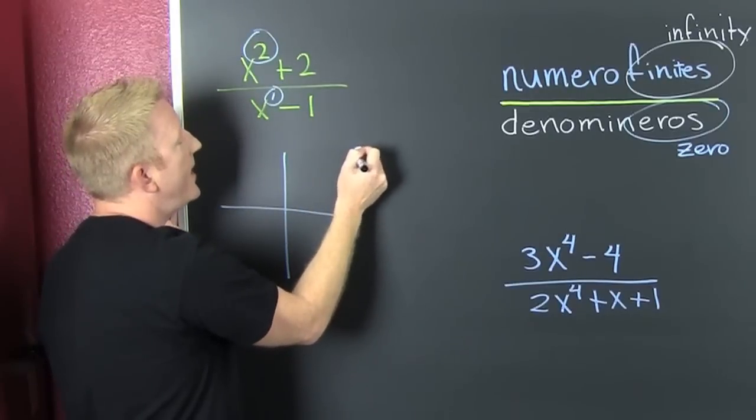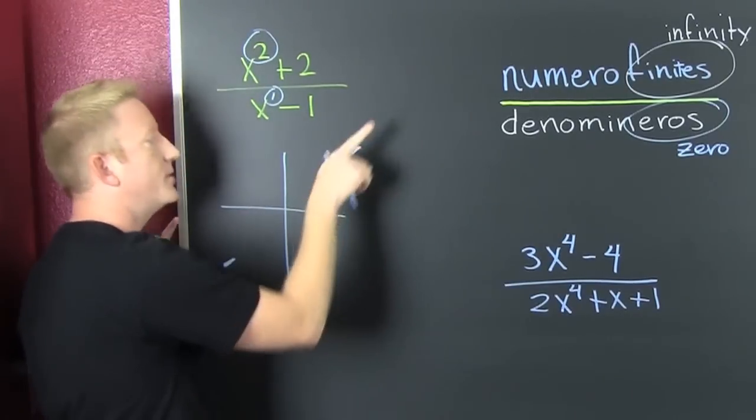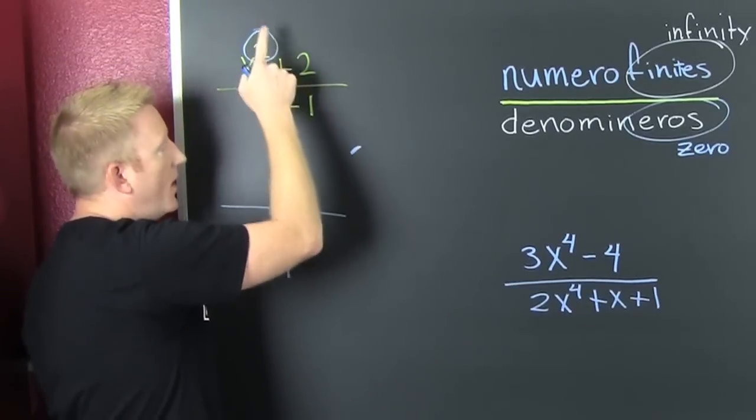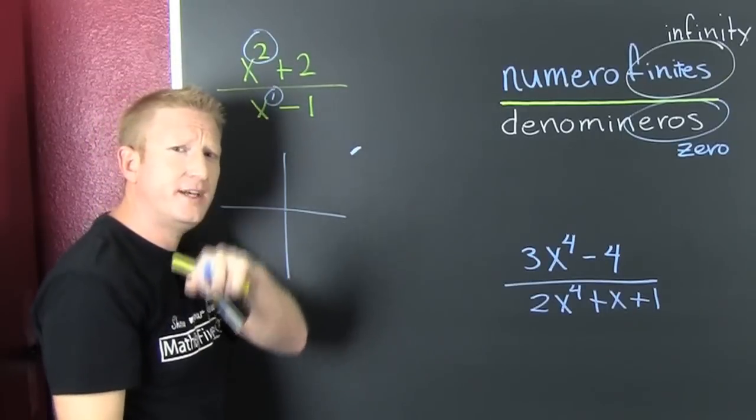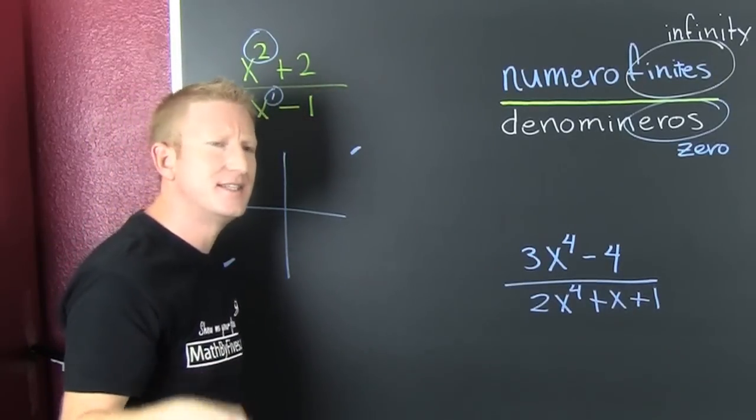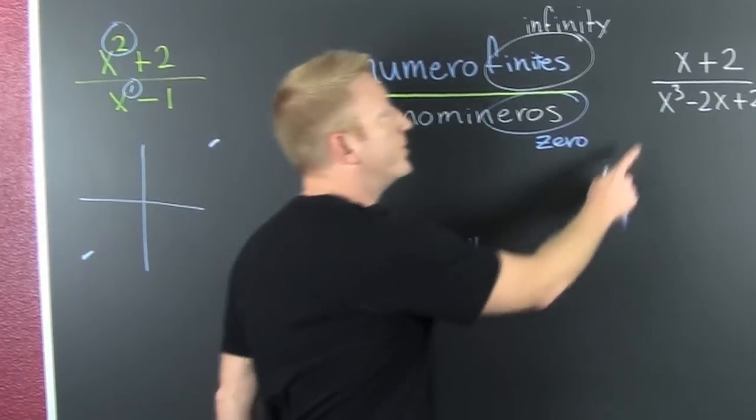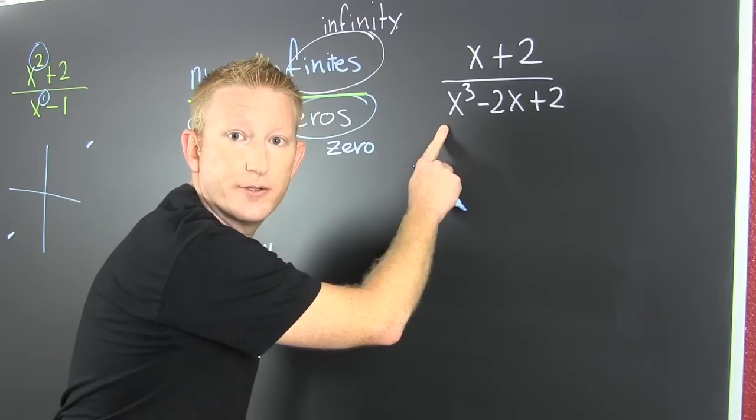Okay. So then, the asymptotes are at plus and minus infinity. On that particular one, more videos on finding the slant asymptote. But this is the story of the numero finis and the denomineros.